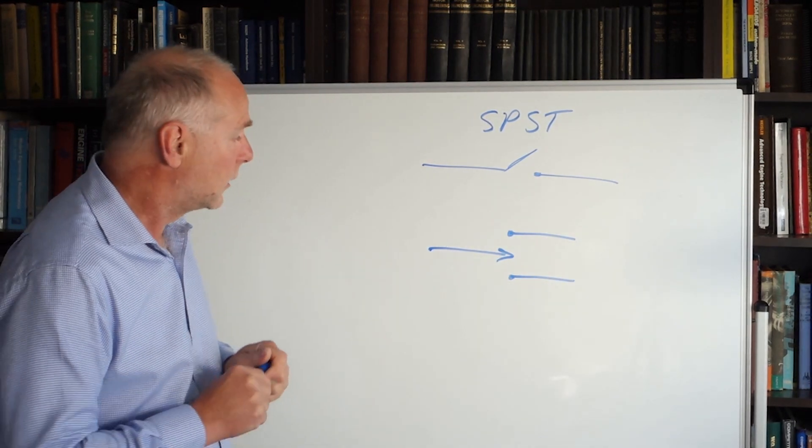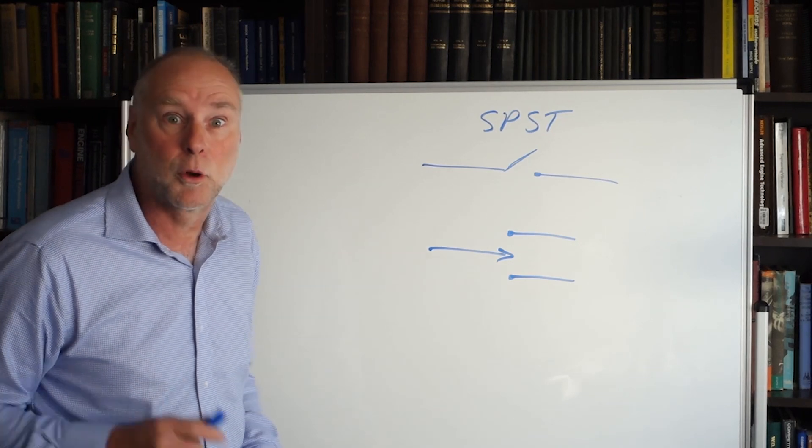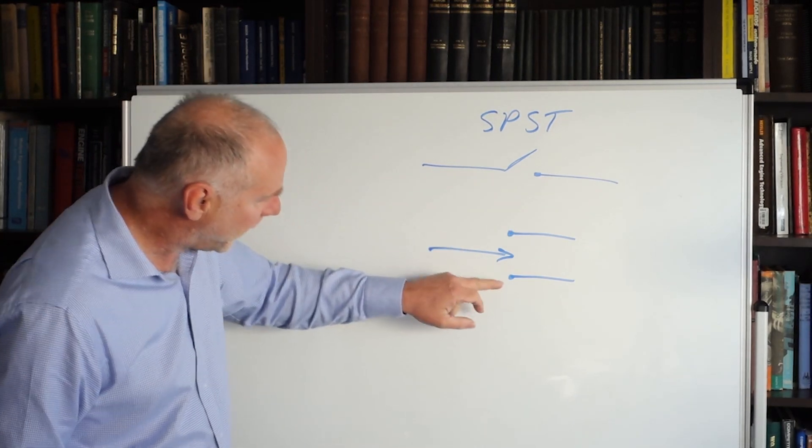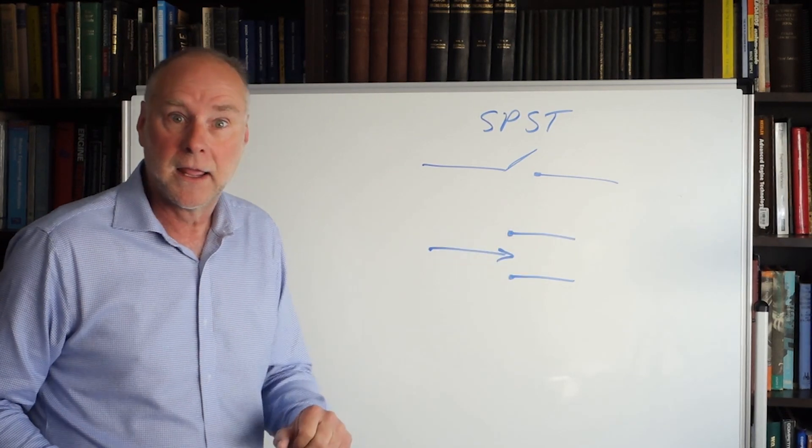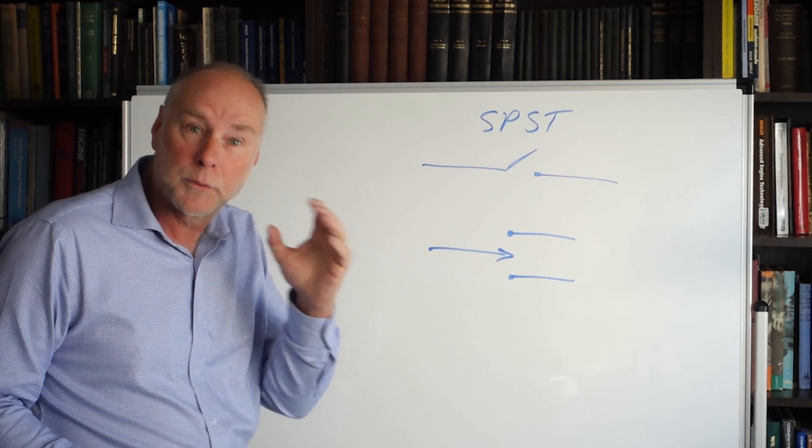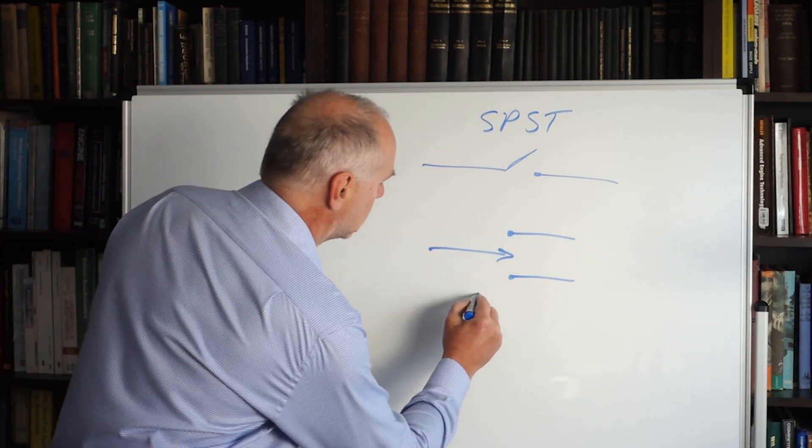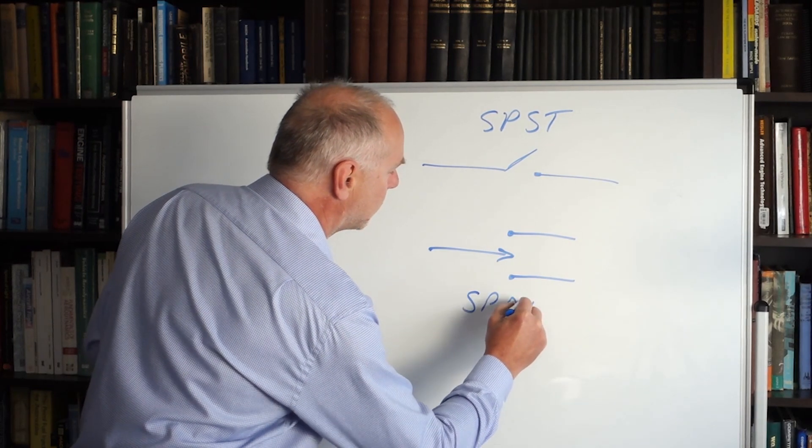Now have a look at this one. We can see it's still only got a single pole, still only got a single input but look where we can switch it. We can switch it down that way or we can switch it up that way. So instead of having a single throw it's got two throws. We call it a single pole double throw switch.